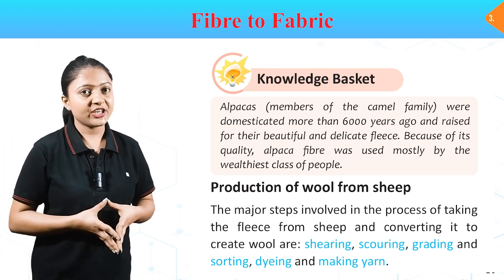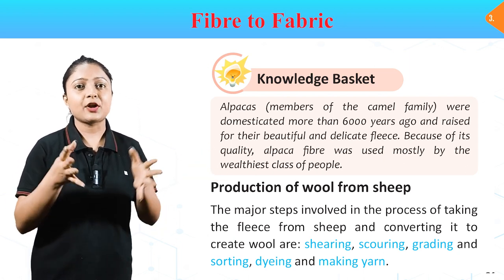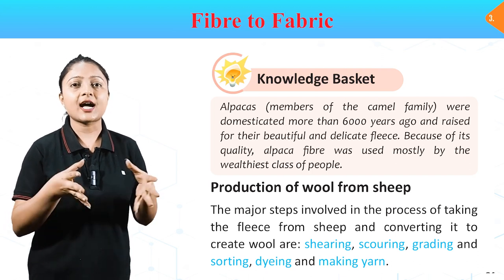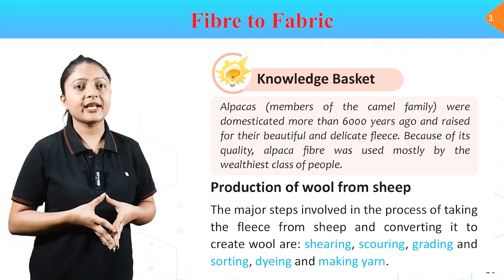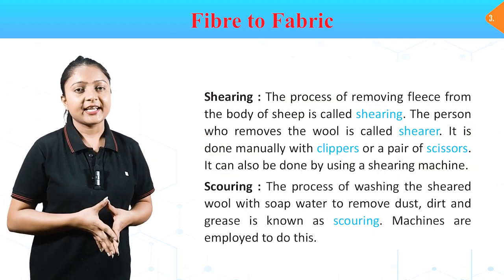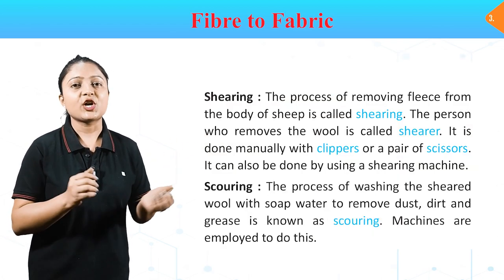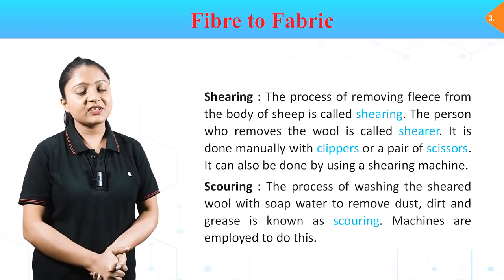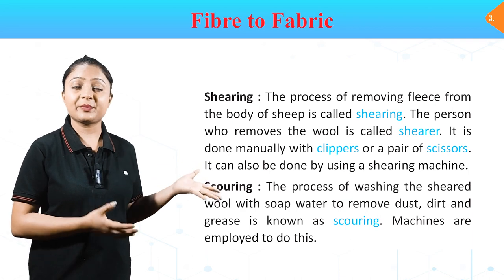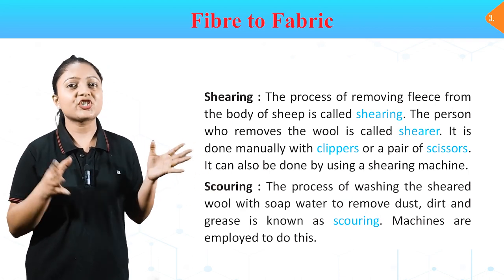Production of Wool from Sheep: the major steps involved in converting fleece from sheep to wool are shearing, scouring, grading and sorting, dyeing and making yarn. Shearing: the process of removing fleece from the body of a sheep is called shearing. The person who removes the wool is called a shearer. It is done manually with clippers or scissors, or by using a shearing machine.